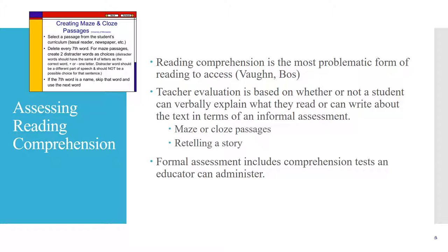Since reading comprehension is the most problematic form of reading to assess, it is important to assess students' reading comprehension in a way that allows them to express their ideas. A teacher evaluation is based on whether a student can verbally explain what they read in terms of an informal assessment. Maze or cloze passages are a good way to assess students' understanding of a text. Because several words in the text are deleted, it is up to the student to use their background knowledge, the content, and the vocabulary in order to fill in the blanks.